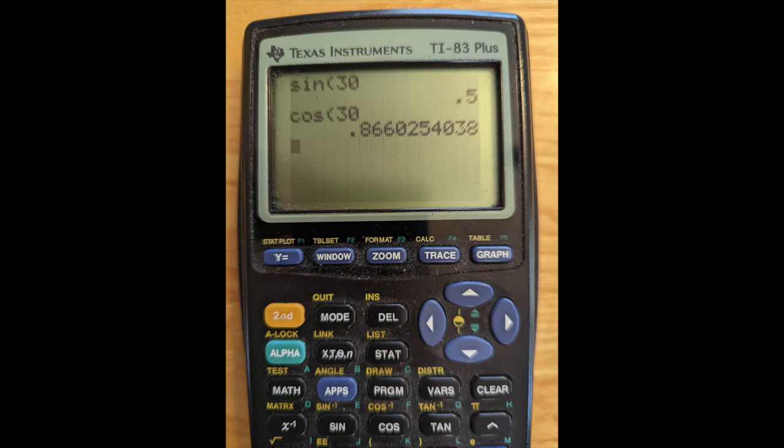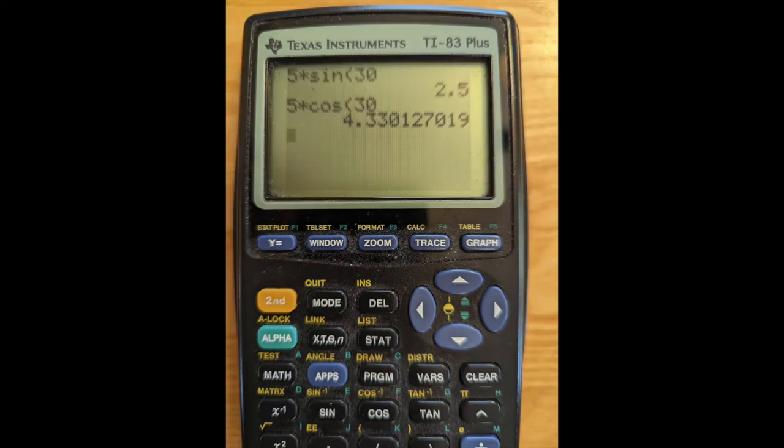So the expression for AY is 5 kilometers times sin 30 degrees, which the calculator says is 2.5 kilometers. That's AY. And 5 times cos 30 is 4.33, and that is A sub X. So we have A sub X A sub Y as 4.33 kilometers, 2.5 kilometers. That's what we wanted.